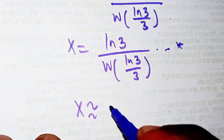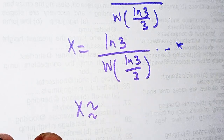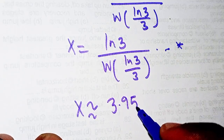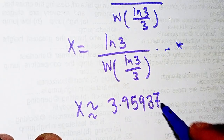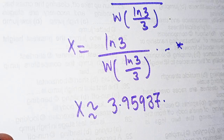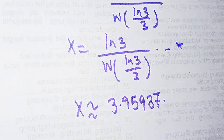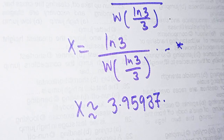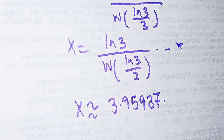The approximate value of x is 3.95937. That is the end of the class. If you find the class very interesting, please subscribe to our YouTube channel if you haven't done so already — hit the bell icon so you'll be notified whenever we upload new content. Thank you so much for watching, and share this class with your colleagues so they can also benefit. Bye!